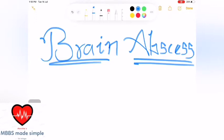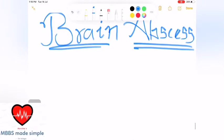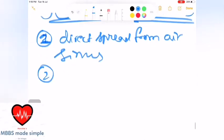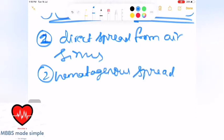There are two types of spreads. First one is direct spread from sinuses. The second path is hematogenous spread through blood. Either from lung, endocarditis, respiratory infection, or dental infection - through blood it travels to the brain and settles there forming an abscess.